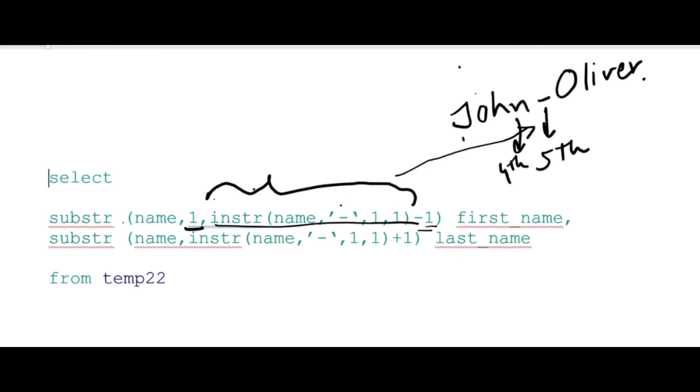Now let's extract the last name. Again, if you look at the INSTR function, we extract the position of the hyphen and add one to that, which gives us the sixth position. We are going to extract all the characters from the sixth position forward. That's how we extract our last name.